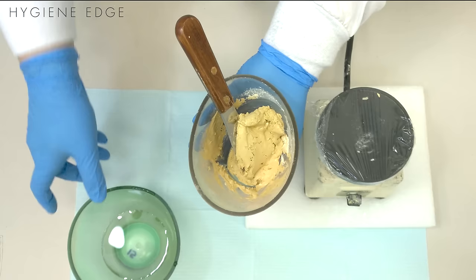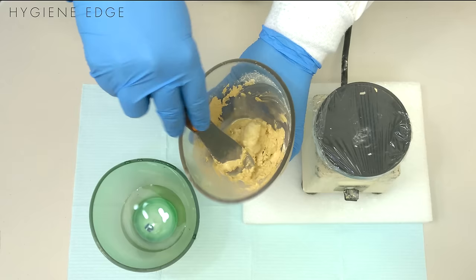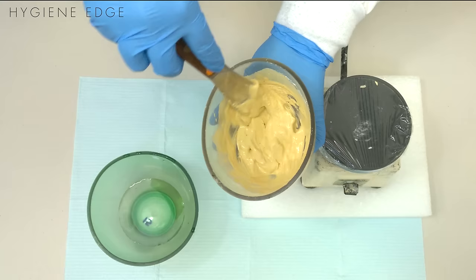You want to make sure you get all the bubbles out, so put lots of pressure against the side of the bowl. The consistency you want is kind of a thick, creamy peanut butter.